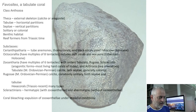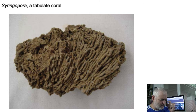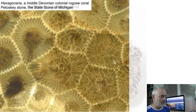Here's Favosites — it's a tabulate coral. These things went extinct in the Permian, but this is a Mississippian variety. Here's another one called Syringopora — very common in Mississippian age rocks, also a type of tabulate coral. There are ones called chain corals as well, like Halysites — it looks like a chain, but it's a tabulate coral. Again, these things are not with us anymore; they have gone extinct.